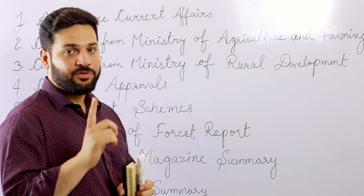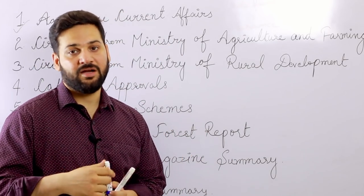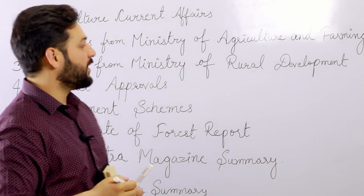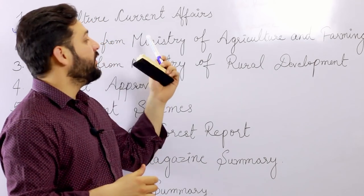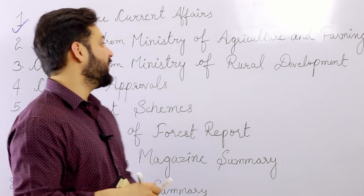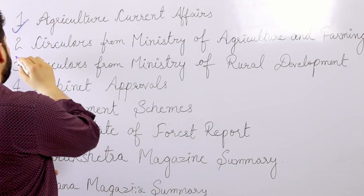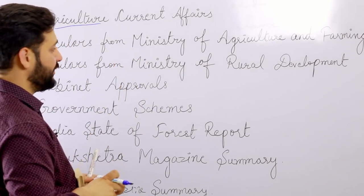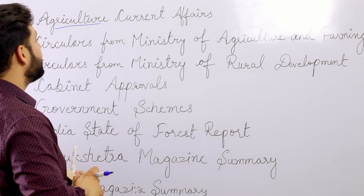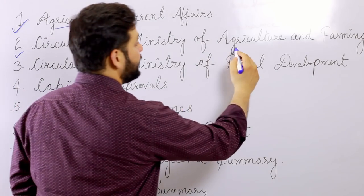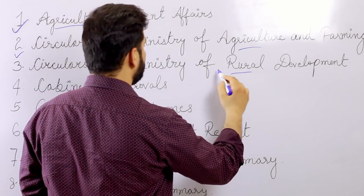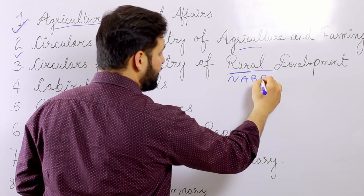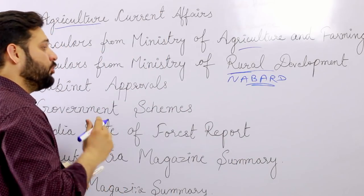So what are the contents of the NABARD Grade A GK Digest? One capsule is available for free — the links are in the description. The first point is agricultural current affairs: we do an analysis of agricultural current affairs each month. These are not normal current affairs; they are related to agricultural schemes. There are also circulars from the Ministry of Agriculture and Farming, circulars from the Ministry of Rural Development, and circulars from NABARD along with NABARD's schemes.